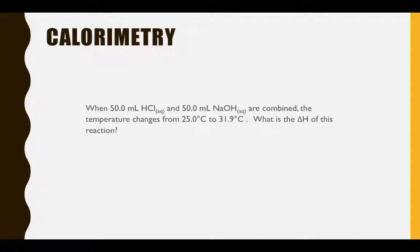Let's look at an example. Here we've combined 50 milliliters of aqueous hydrochloric acid with 50 milliliters of aqueous sodium hydroxide. When this reaction occurs, the temperature of the combined solutions changes from 25 degrees Celsius to 31.9 degrees Celsius,